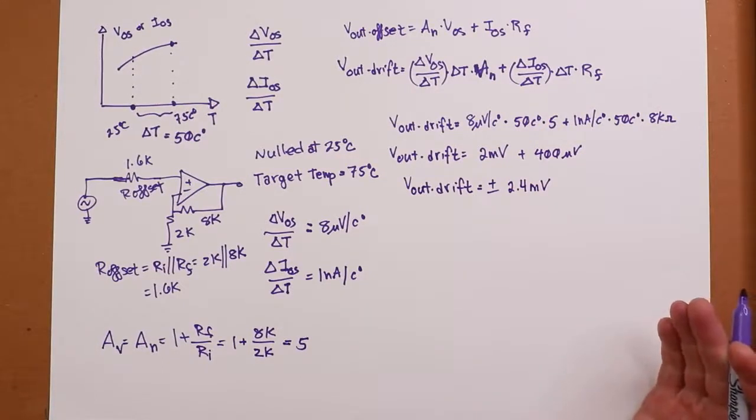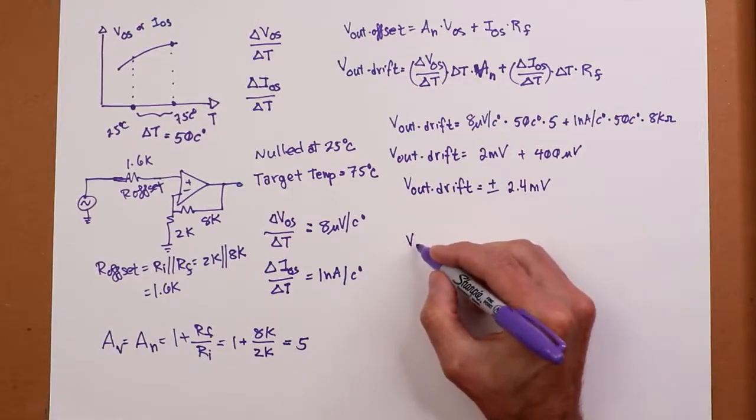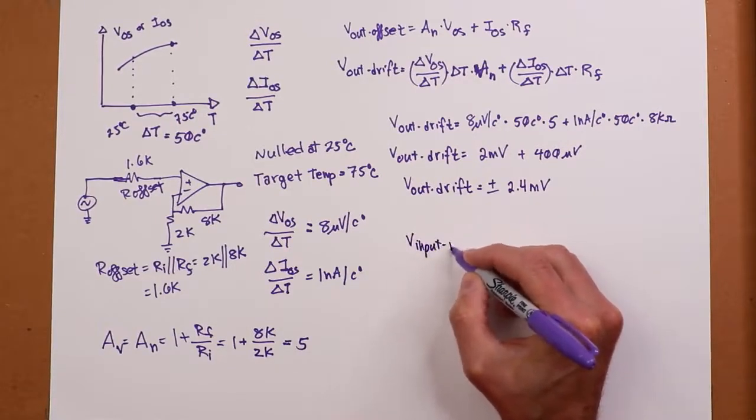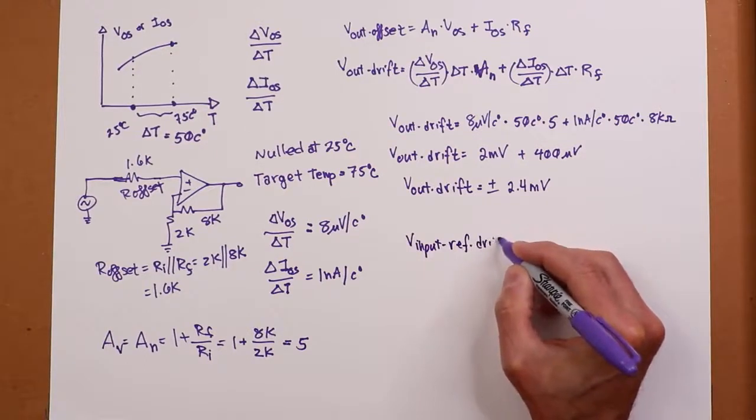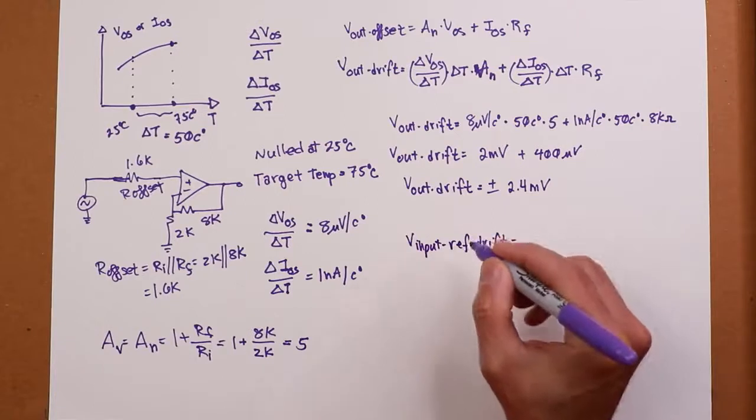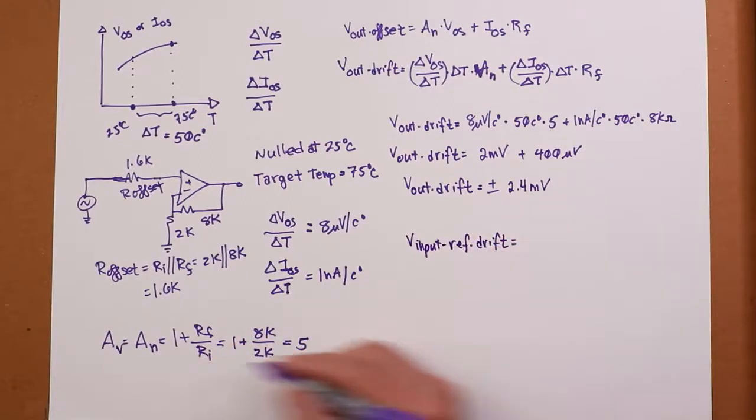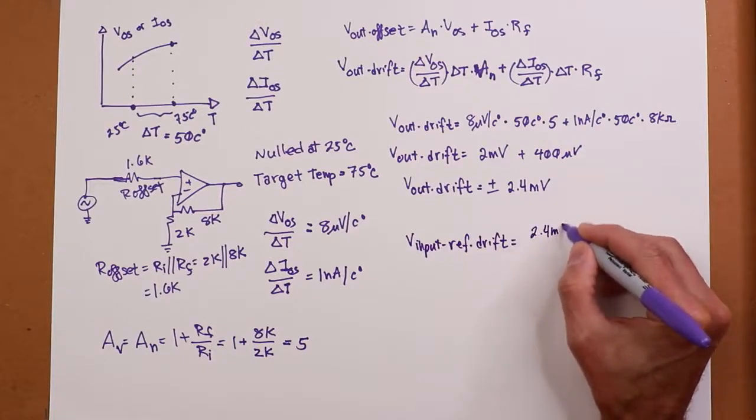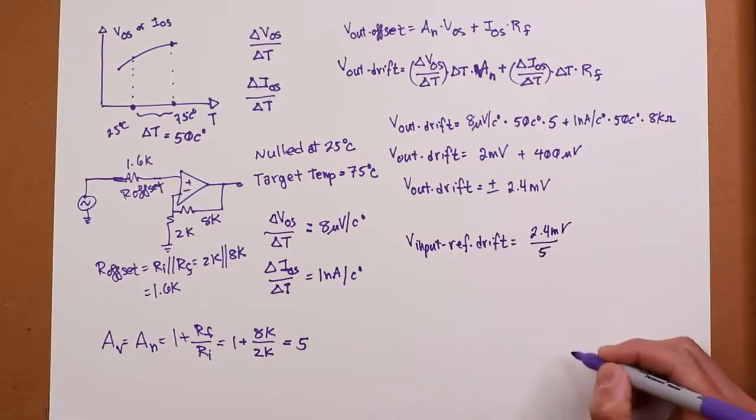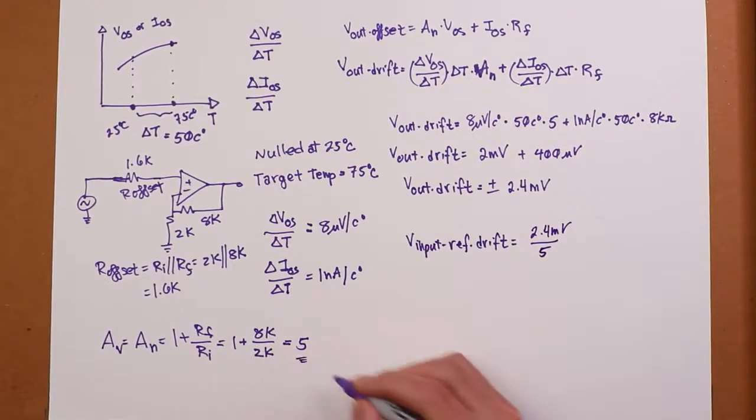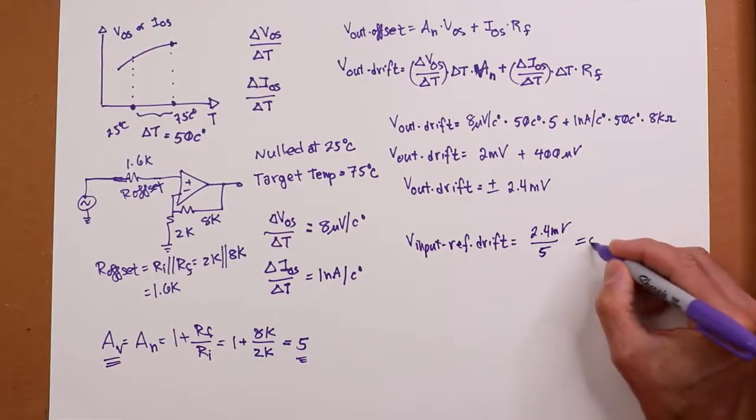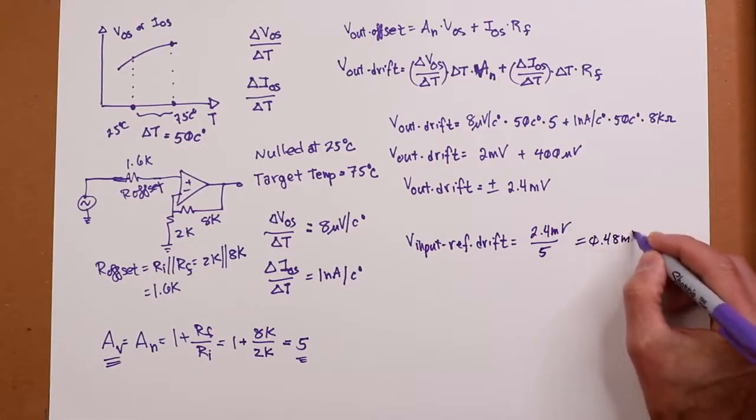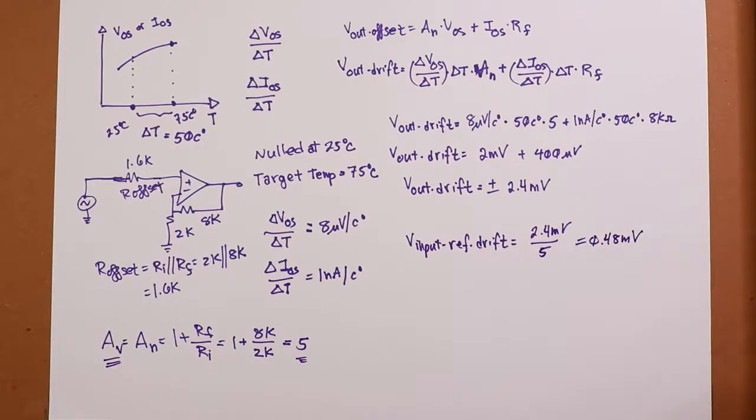If I was interested in finding the input-referred drift, we find that the same way we did with the offset. So take that output drift, divide it by the signal gain. Again the signal gain in this case is the same as noise gain of 5. So you take your 2.4 millivolts and you would divide that by 5, your signal gain. Alright. So that would give us 0.48 millivolts, 480 microvolts. Bingo!